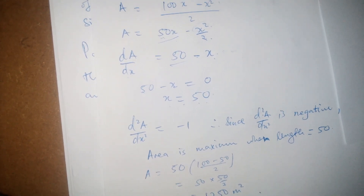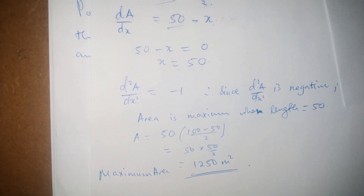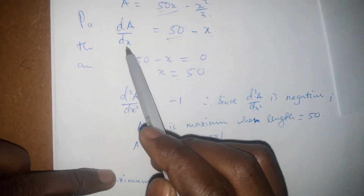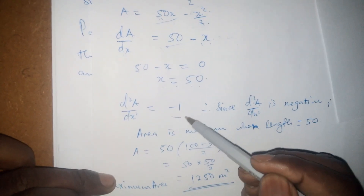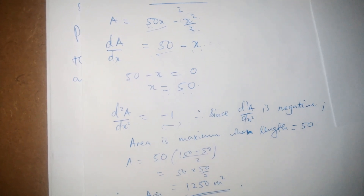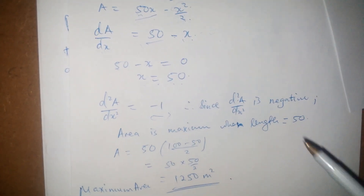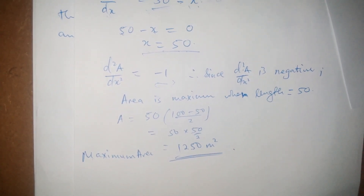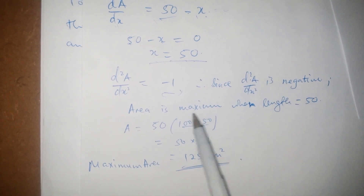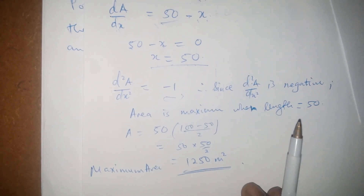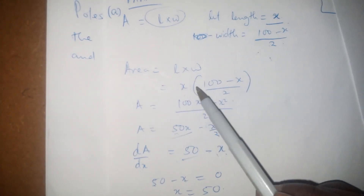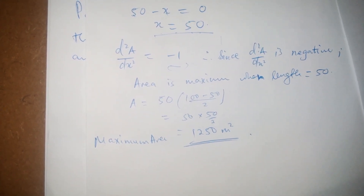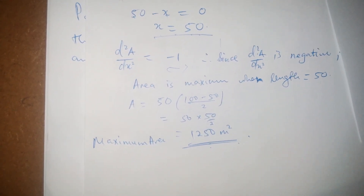After getting x = 50, we must confirm if it is a maximum or minimum point. We differentiate again to get the second derivative d²A/dx². Differentiating 50 − x gives: 50 becomes 0, and −x becomes −1. Since d²A/dx² is negative, this confirms that x = 50 is a maximum. Substituting x = 50 back gives a maximum area of 1250 square meters.